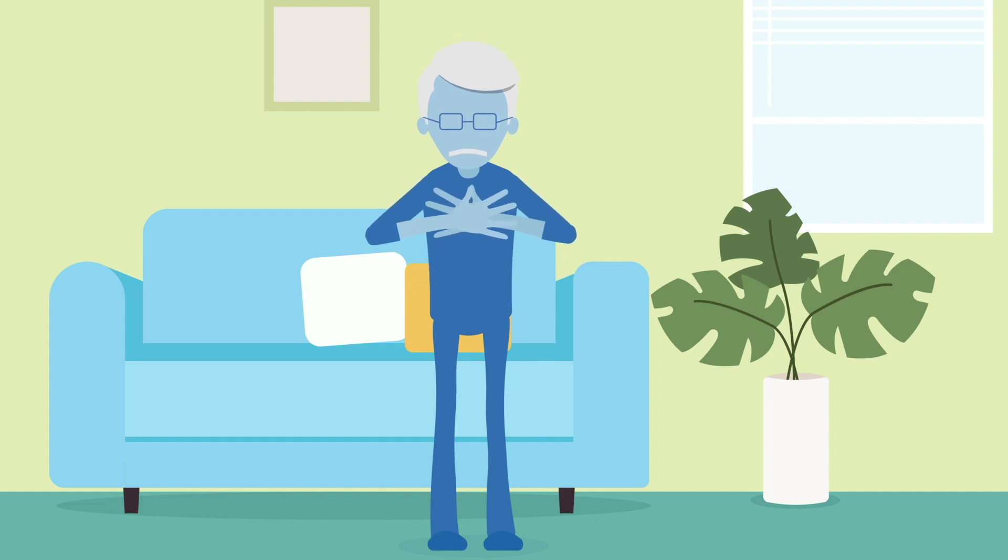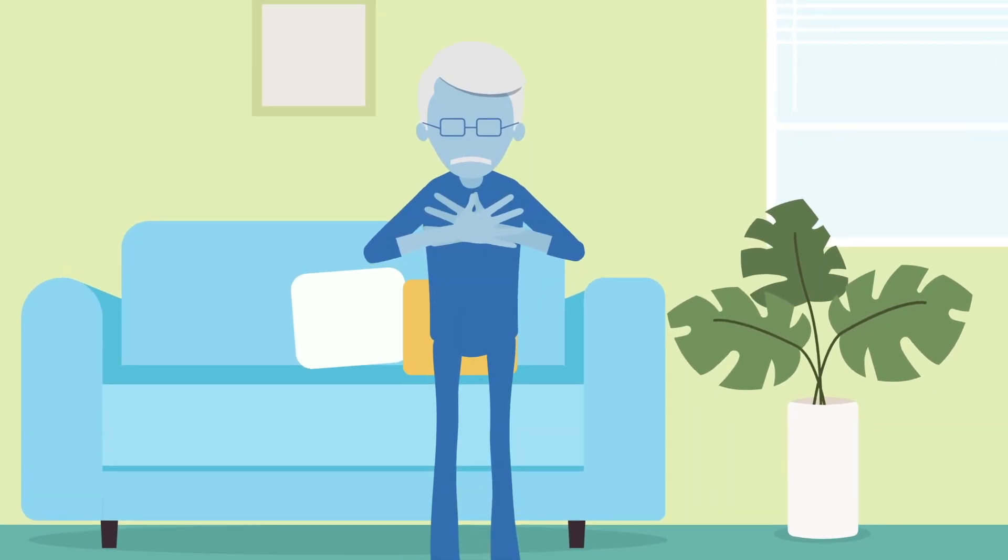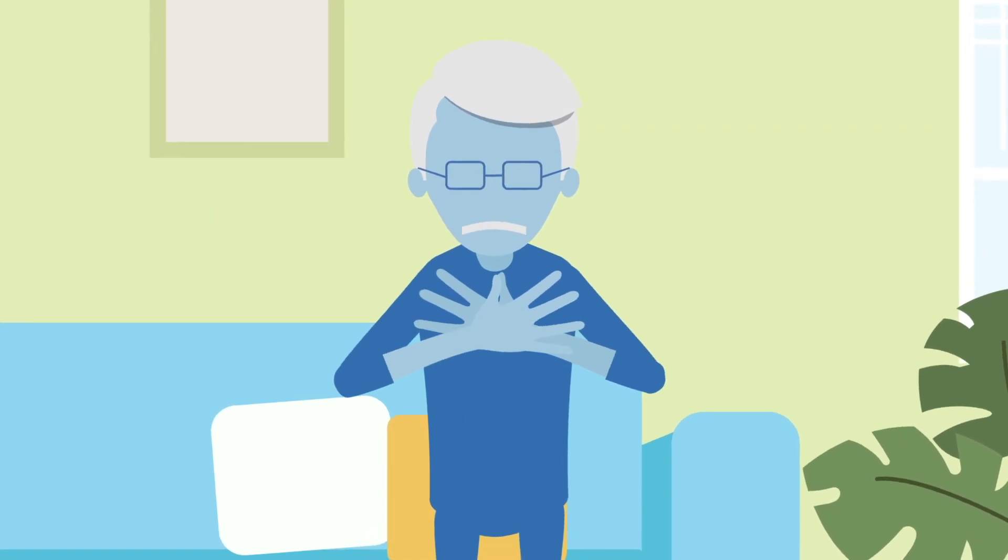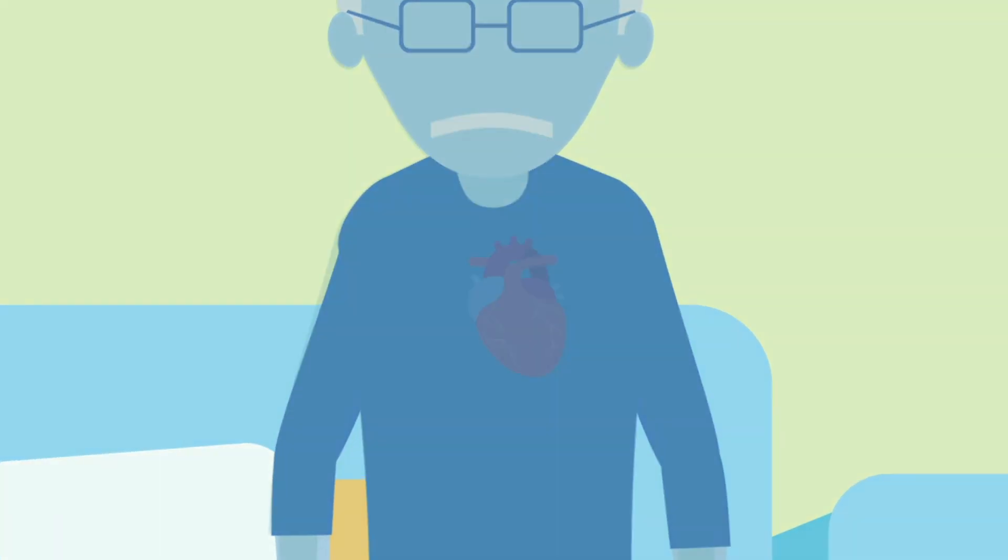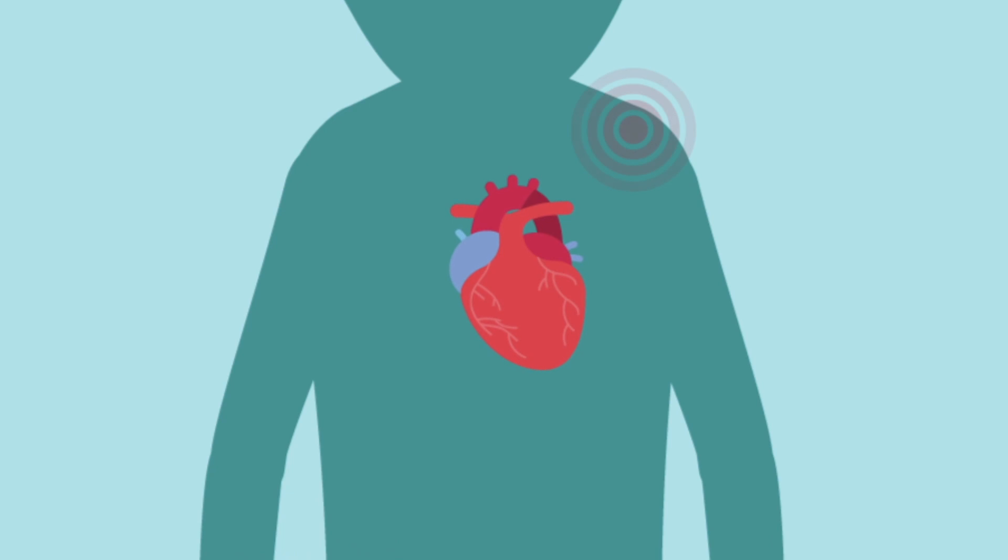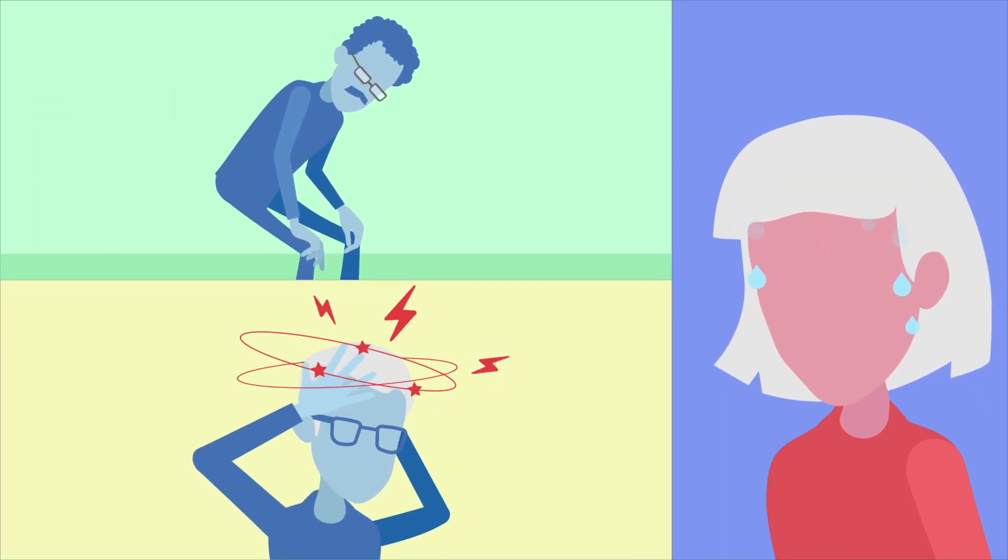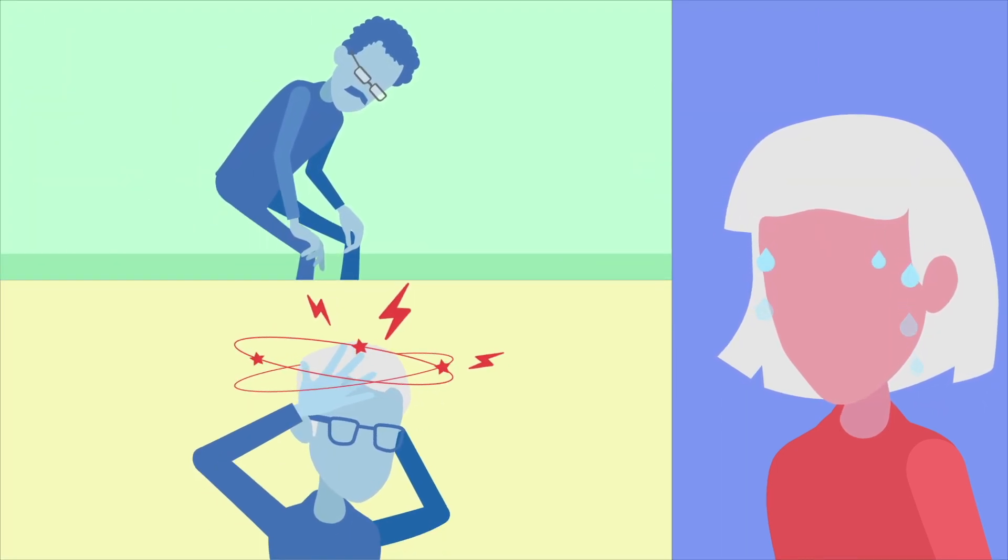A heart attack can present in different ways. Most commonly, it causes severe chest pain, a feeling of pressure or weight on the chest. The pain can also be in left arm, upper back, neck, or upper abdomen. The person may feel difficulty in breathing, have sweating, or feel dizzy.